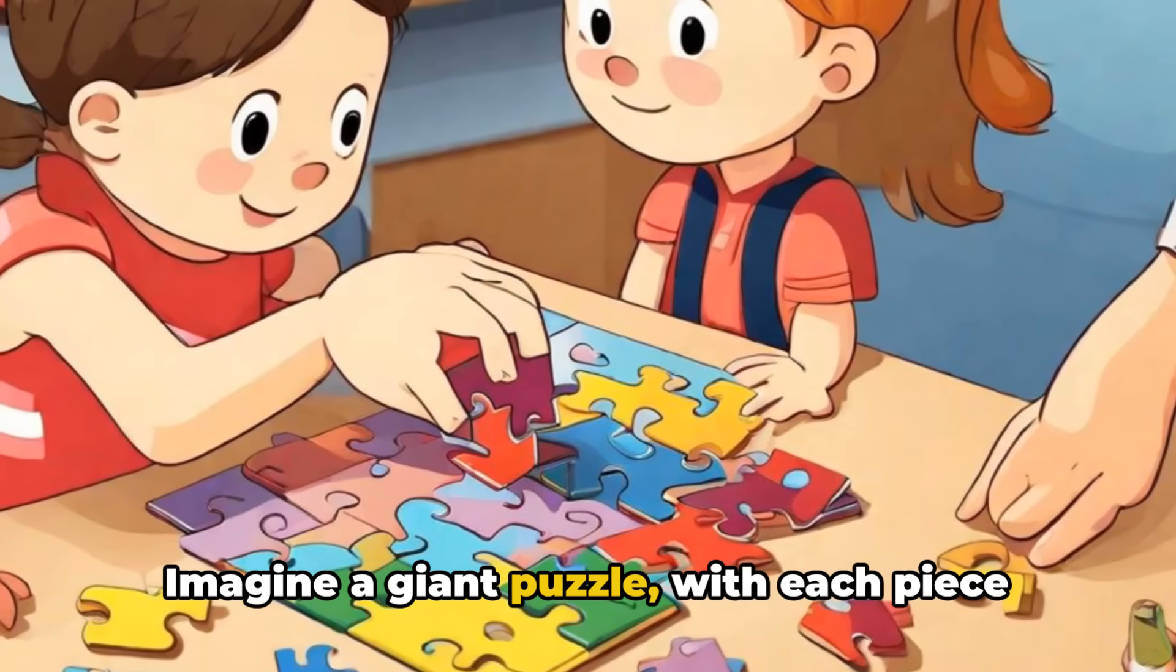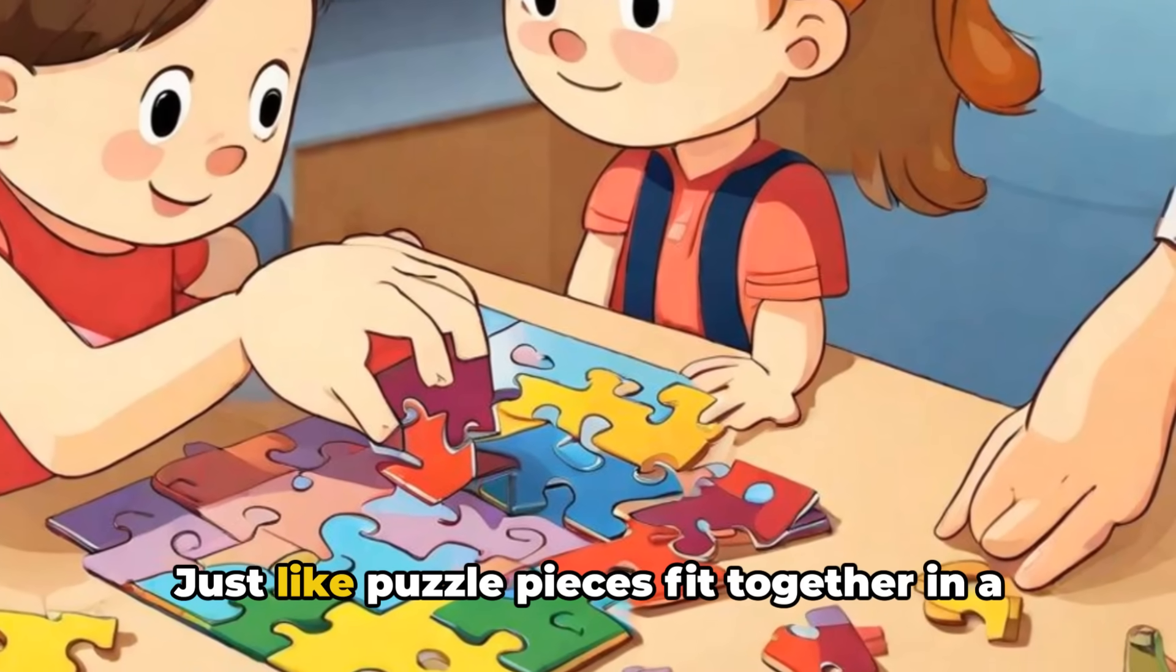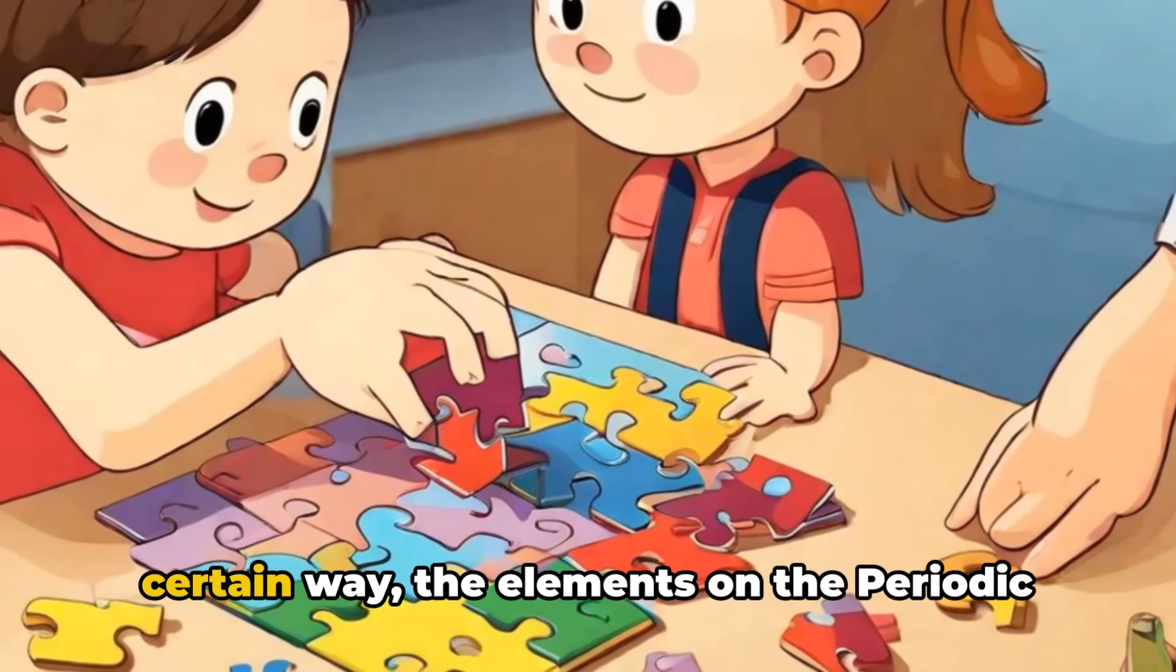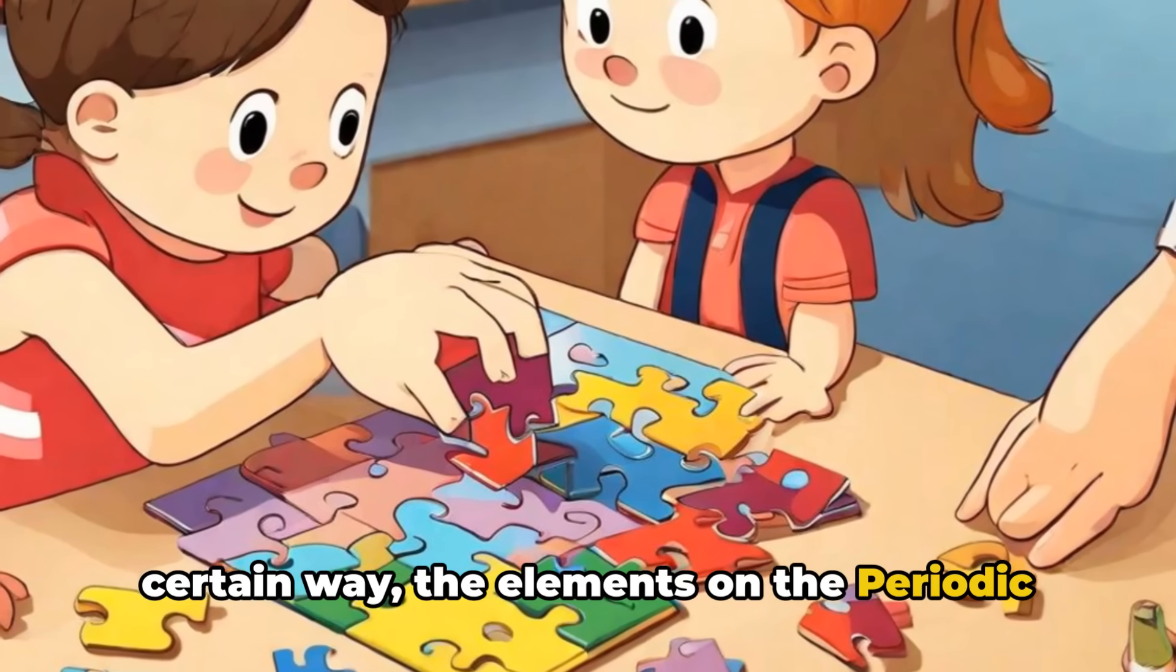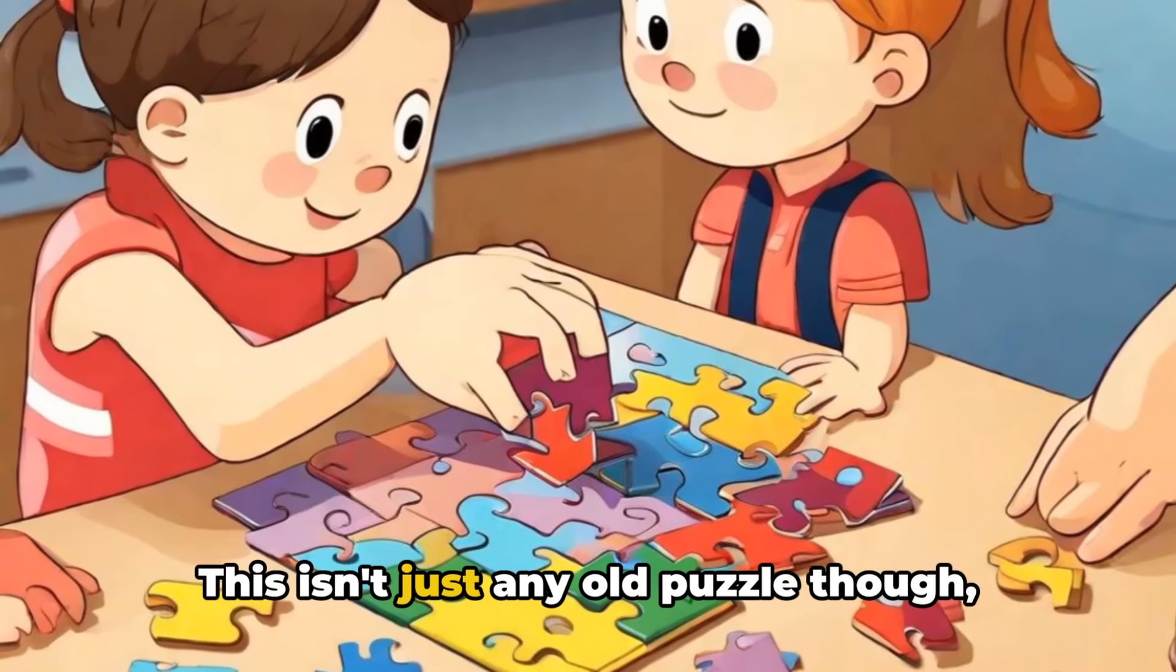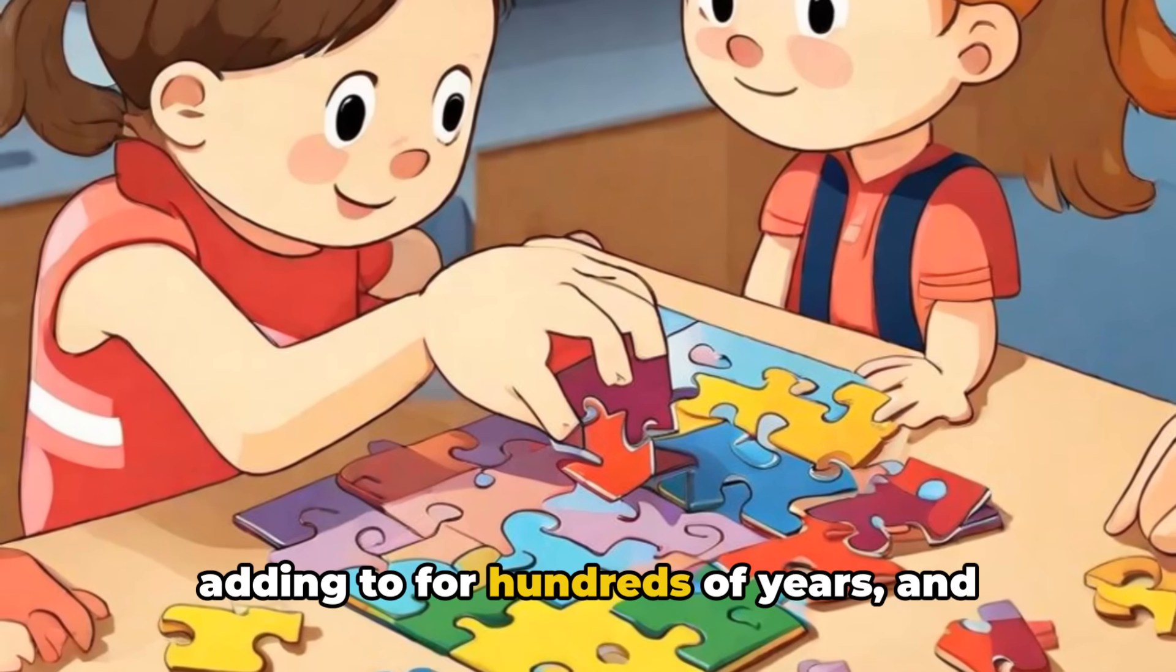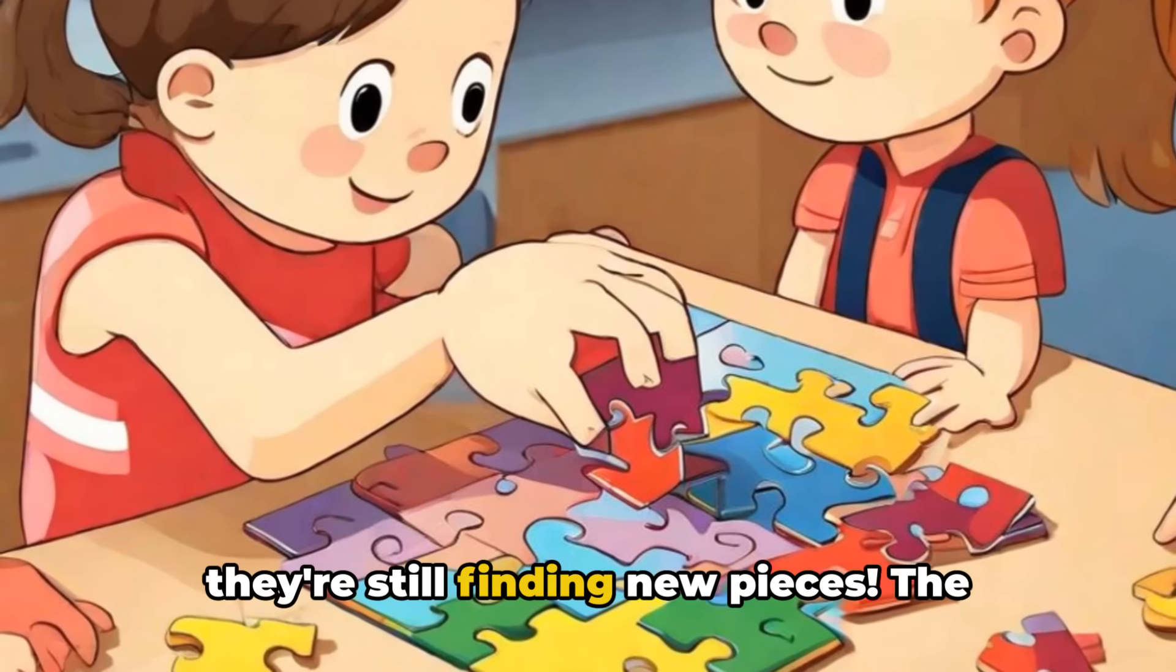Imagine a giant puzzle, with each piece representing a different element. Just like puzzle pieces fit together in a certain way, the elements on the periodic table are arranged in a special order too. This isn't just any old puzzle though. It's a puzzle that scientists have been adding to for hundreds of years, and they're still finding new pieces.